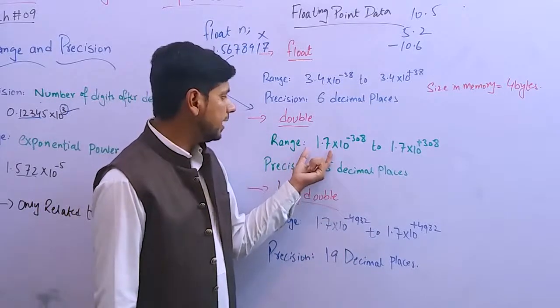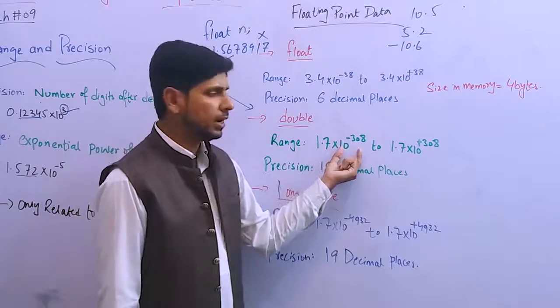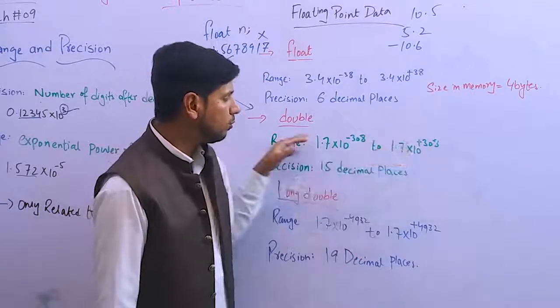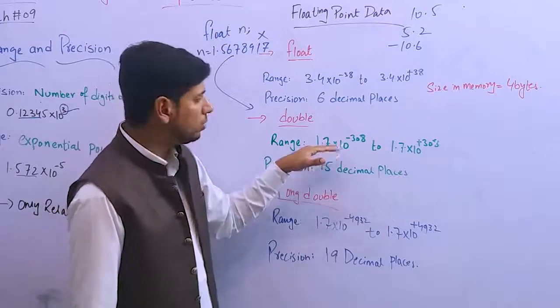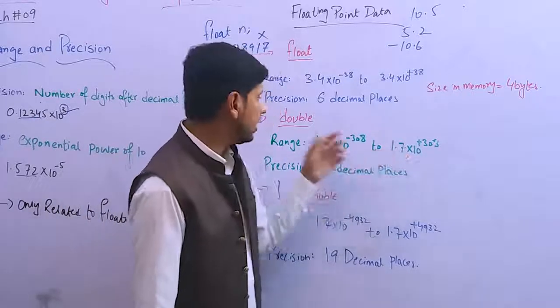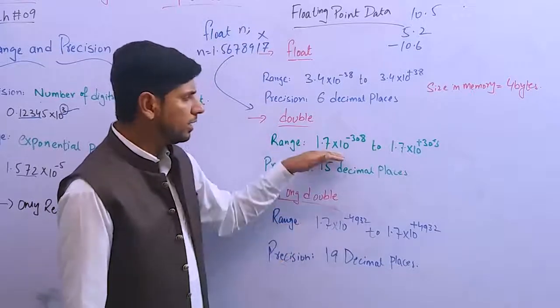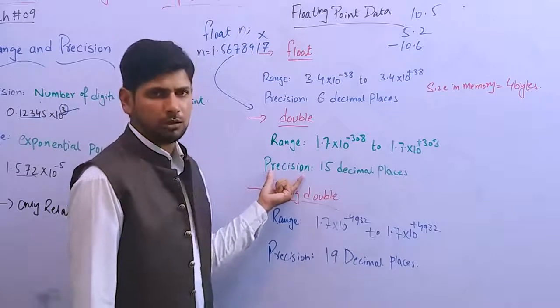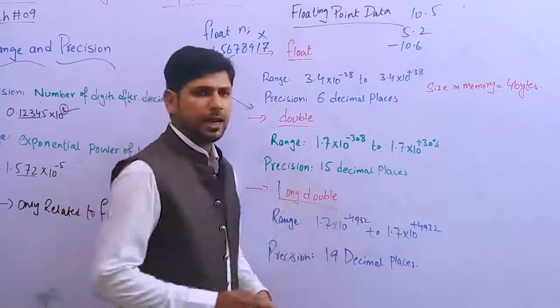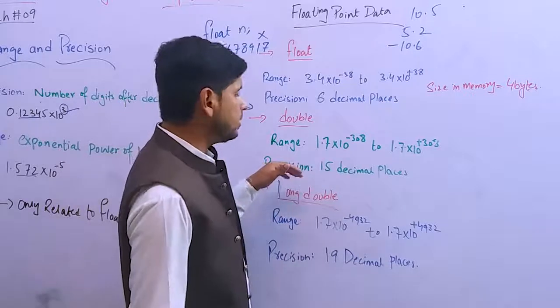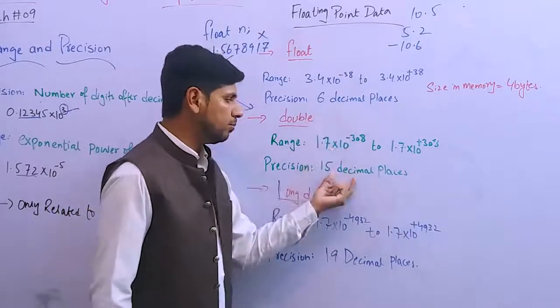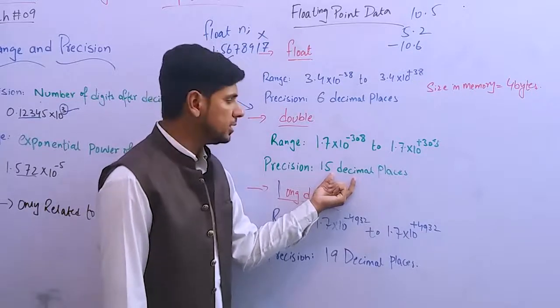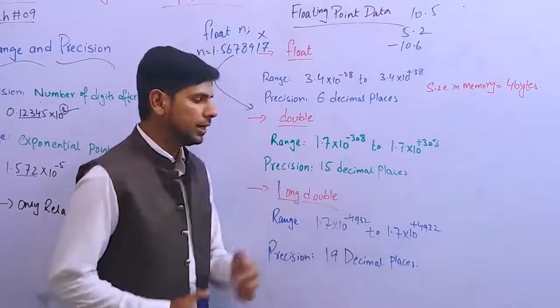Float has a range of 1.7 into 10 to the power minus 38, and the precision is 6 decimal places. If your value has more than 6 decimal places - meaning 7, 8, 9, 10, up to 15 decimal places - then you use double data type.